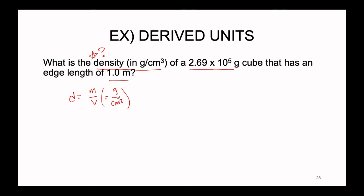We know density equals mass divided by volume, and specifically we need density in grams per centimeter cubed. We need a mass in grams and a volume in centimeters cubed. The mass is already given in grams — 2.69 × 10⁵ g — so we place it directly in the numerator. Now we need to find the volume in centimeters cubed.